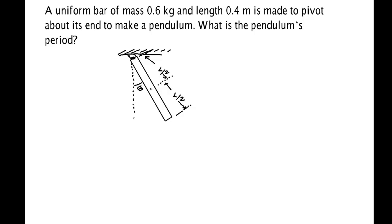The uniform bar has a mass of 0.6 kilograms and a length of 0.4 meters. So this is 0.2 meters to the middle of the bar and then of course to the end of the bar is another 0.2 meters.